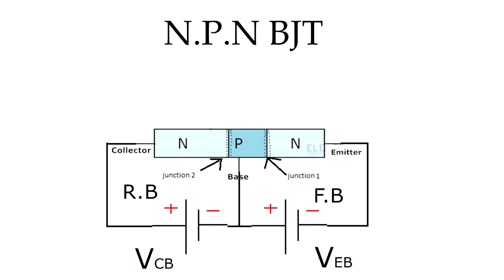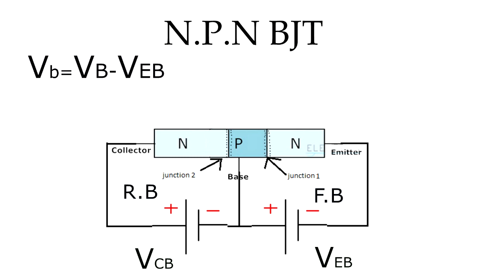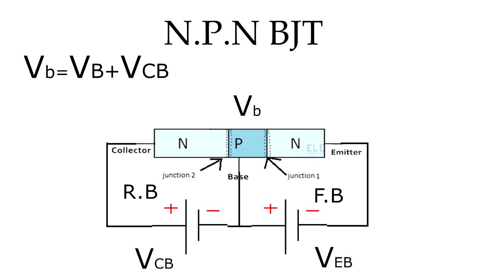Let's analyze the movement of electrons in the BJT. At the beginning, before any voltage is applied, the potential barrier exists at junctions J1 and J2. After applying the voltages, junction J1 is forward biased, so the potential barrier reduces and the new potential is VB minus VEB. Junction J2 is reverse biased, so the potential increases and the new potential is VB plus VCB.